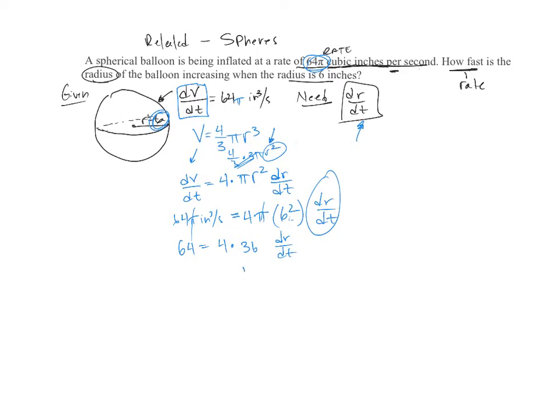All right, cleaning all this up, you get dr/dt comes out to be 16 over 36, and then this reduces down to 4/9 inches per second, which is what my dr/dt is for this problem.